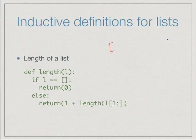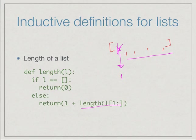Otherwise we pull out the first value — it contributes one to the length — and inductively compute the length of the rest. So we return 1 plus the length of the slice starting at position 1. This is an inductive definition of length translated into a recursive function, and by looking at its structure it's obvious it computes length correctly, because this is exactly how you would define length inductively.